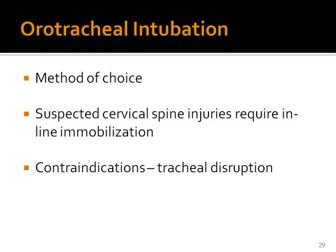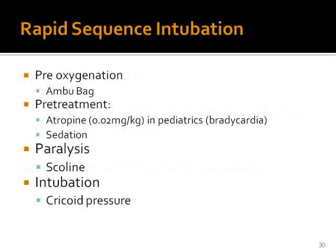For combative patients, pediatric patients, or those who are unconscious or semi-conscious, we usually do rapid sequence intubation. This illustrates the procedure: we oxygenate the patient, give drugs for sedation, administer atropine to prevent bradycardia and reduce tracheal secretions, then paralyze the patient using succinylcholine — a short-acting neuromuscular agent — and then intubate.